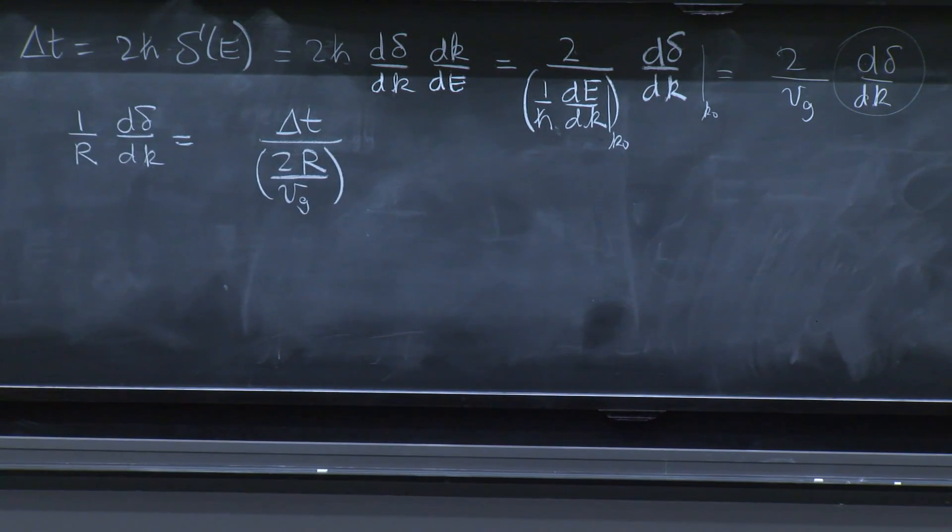So I did a few steps. I move the 2 over vg down to the left. And I multiply by 1 over r. And now, we have a nice expression. Listen, this is the delay.